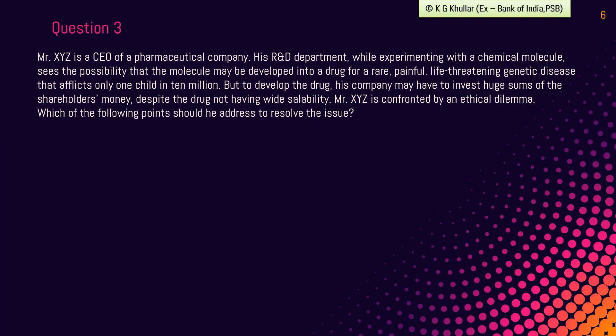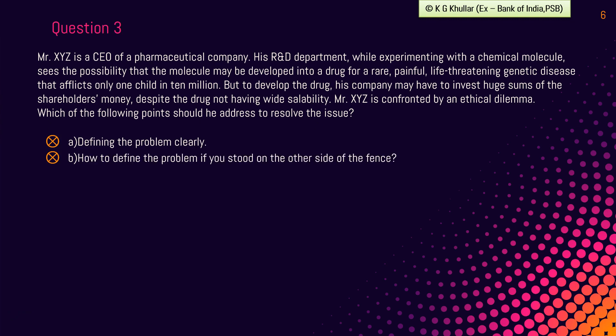Which of the following points should he address to resolve the issue? Option A: defining the problem clearly. Option B: how to define the problem if you stood on the other side of the fence. Option C: how could your decision or action injure. Option D: all of the above. Mr. XYZ has to choose between developing a drug for a painful and life-threatening disease affecting 1 in 10 million, and the action of spending huge sums of shareholders' money. Both are positive and ethically right choices. As a socially responsible person, he must think in terms of eliminating a serious illness but also be careful in dealing with shareholders' money. This is a classic case of an ethical dilemma.